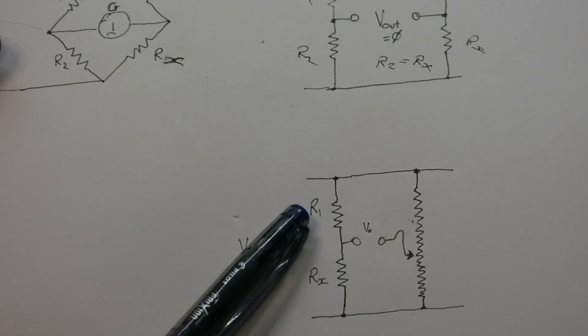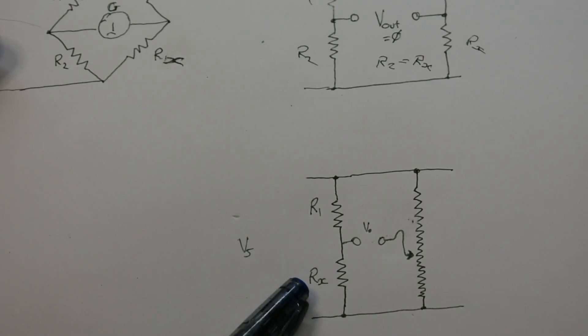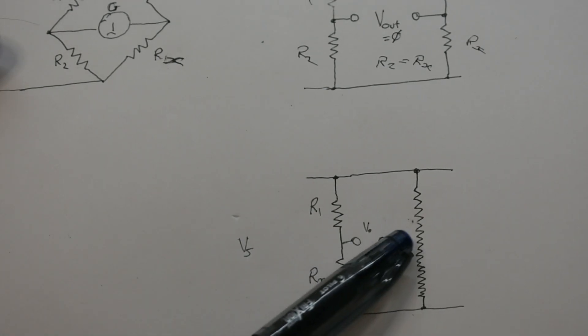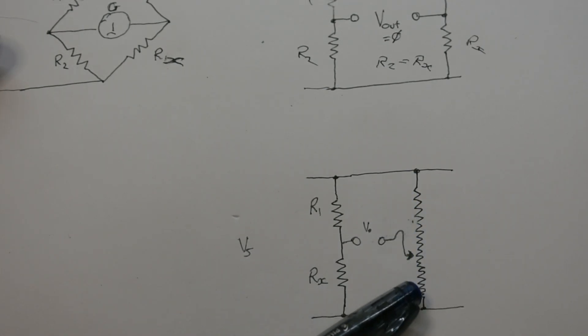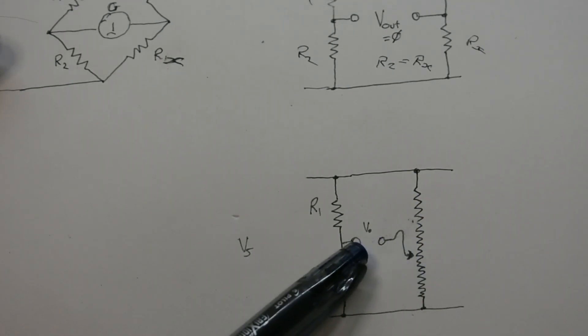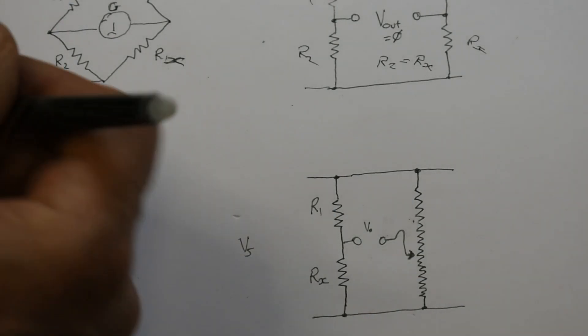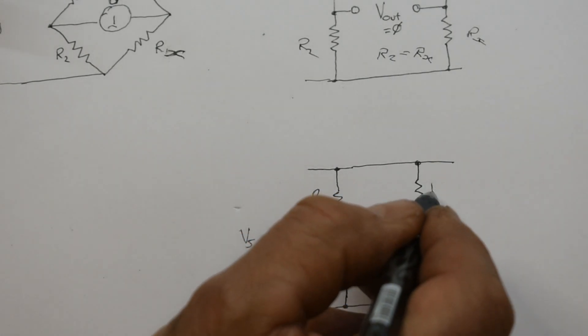So this time I have a known resistor R1, but I have an unknown resistor and now this side Rx. But I can move this across this potential here to change the zero point. So what I'm doing is looking, moving along here to balance the bridge by finding a zero volt or zero current point here. And then I'll have a measurement on along here.